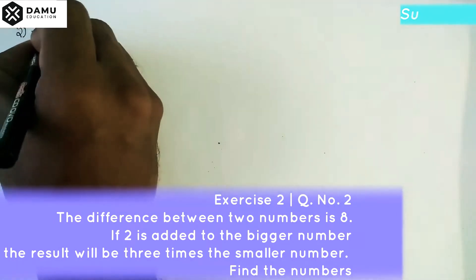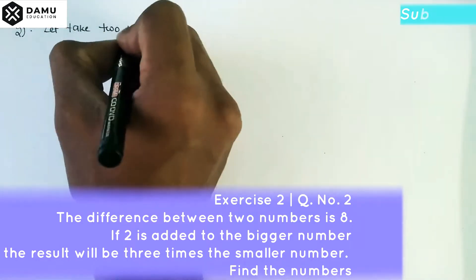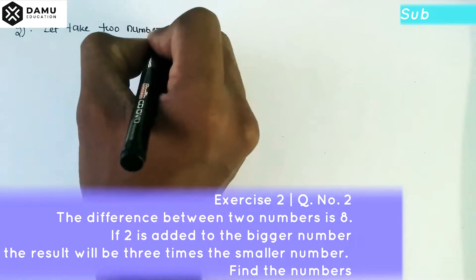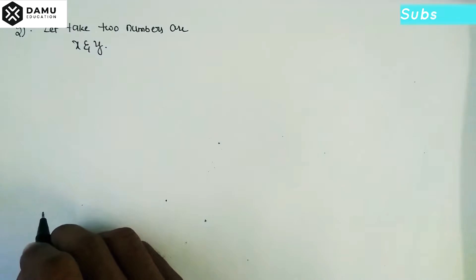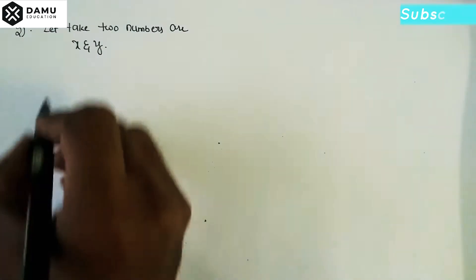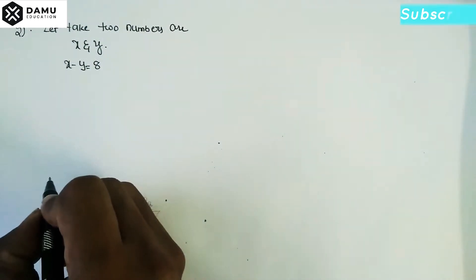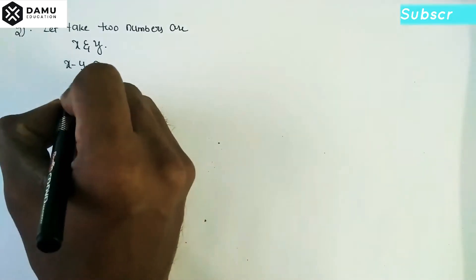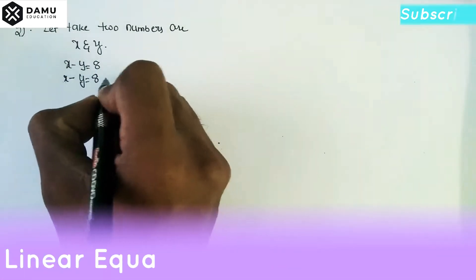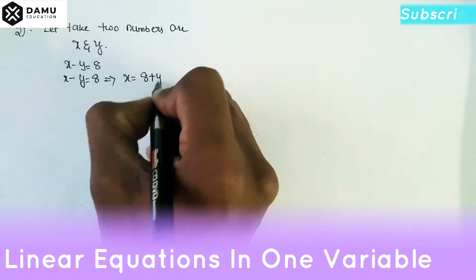Let's take two numbers x and y. The difference, meaning subtraction, between the two numbers gives us x minus y equals 8. From this, x will be equal to 8 plus y.